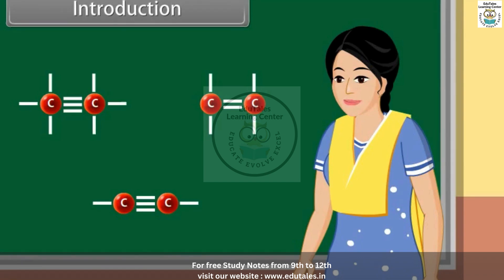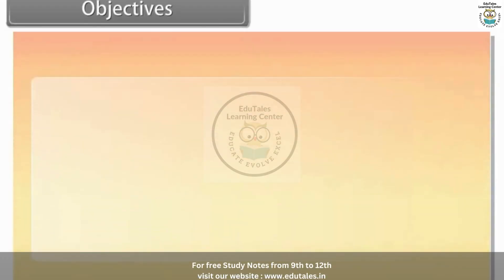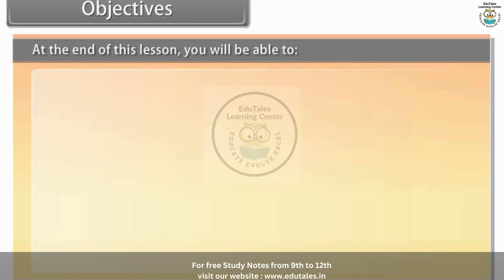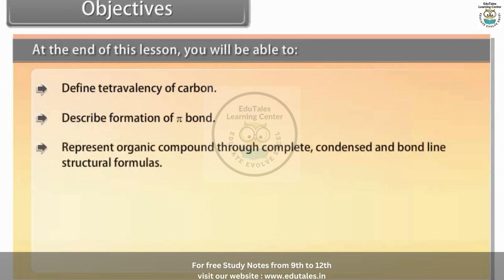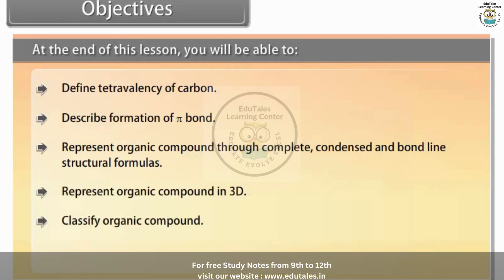In this lesson, you will learn organic chemistry and some basic principles. At the end of this lesson, you will be able to: define tetravalency of carbon, describe formation of pi bond, represent organic compounds through complete, condensed and bond-line structural formulas, represent organic compounds in 3D, classify organic compounds, and describe nomenclature of organic compounds.